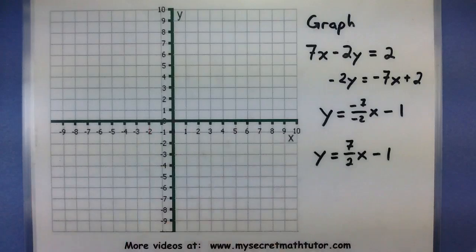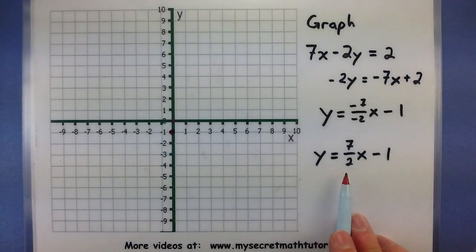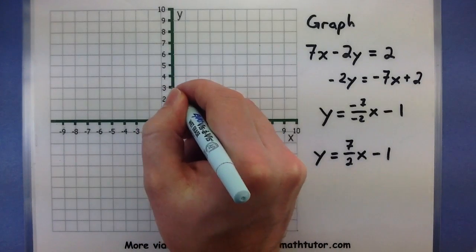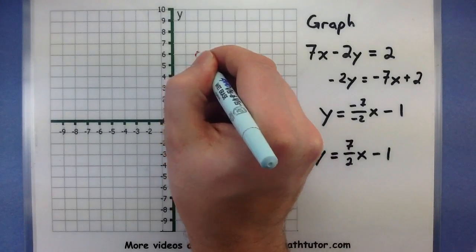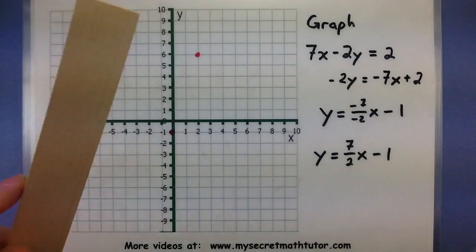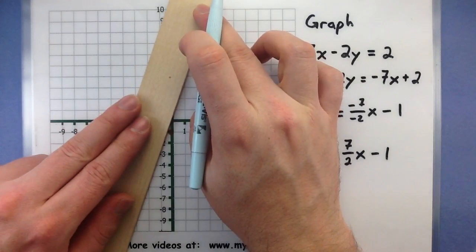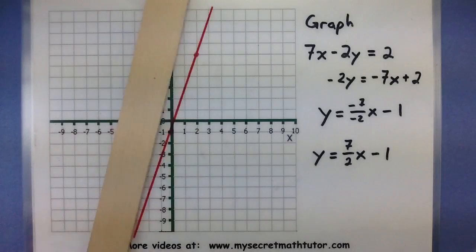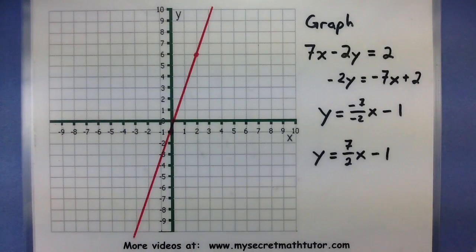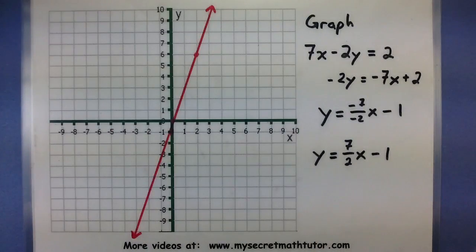We'll start with negative 1 on the y-axis — that will be our first point. From that point, we go up 7 and to the right 2: 1, 2, 3, 4, 5, 6, 7, then to the right 2. There's our second point. Now that we have two points, let's go ahead and connect them. There we go — there's our line.